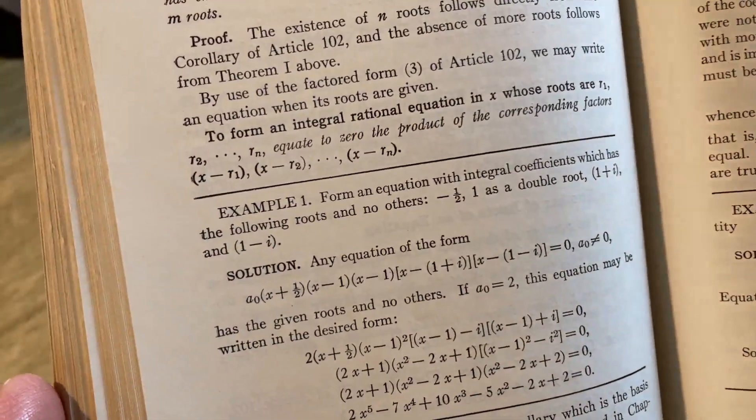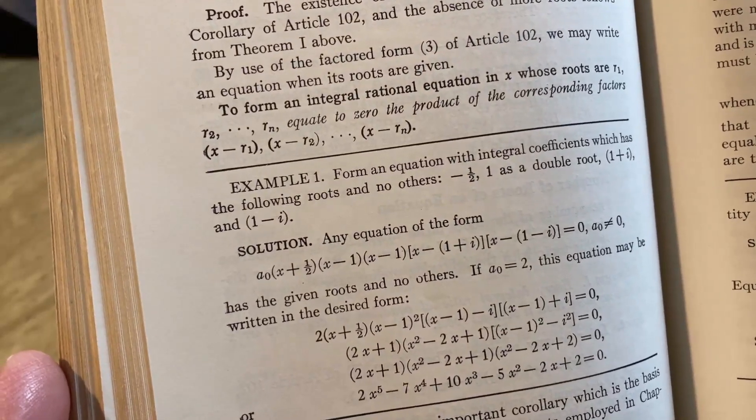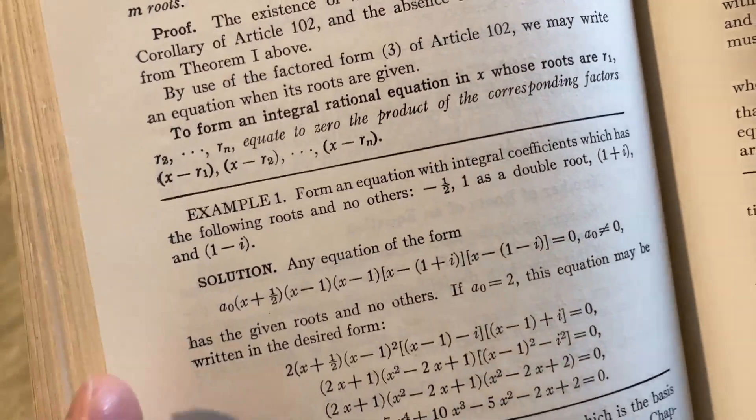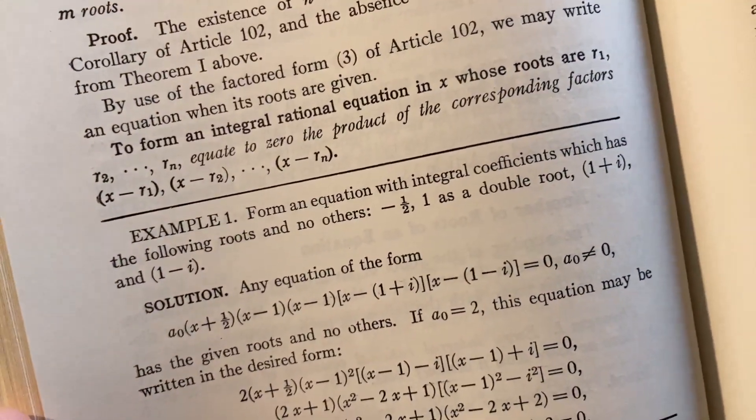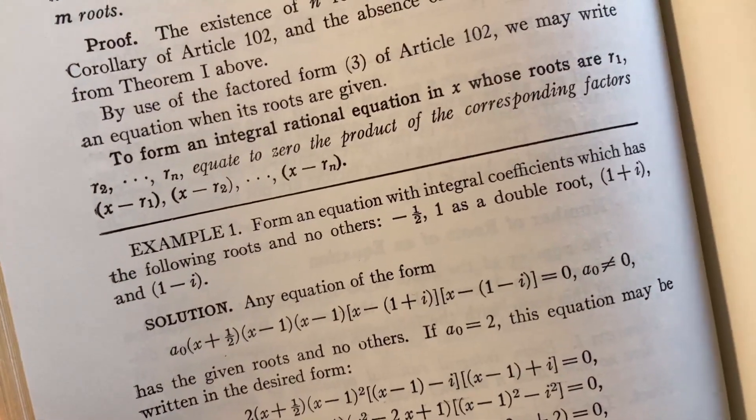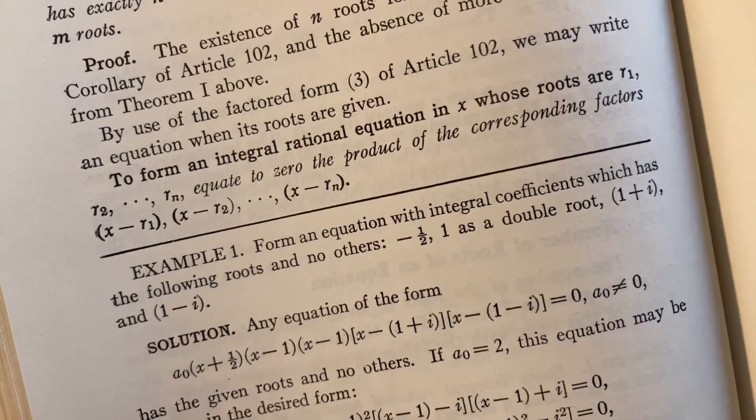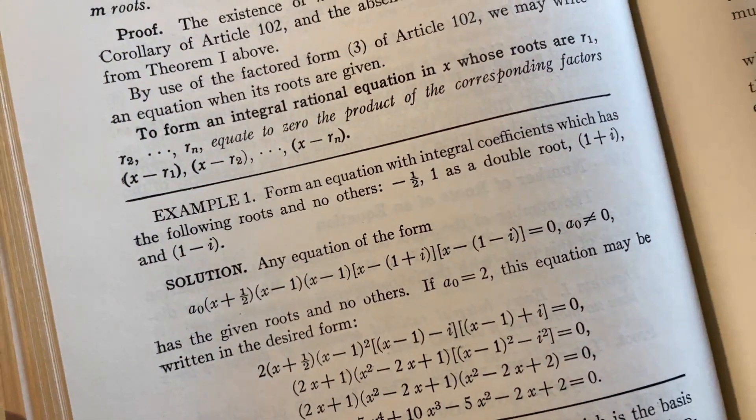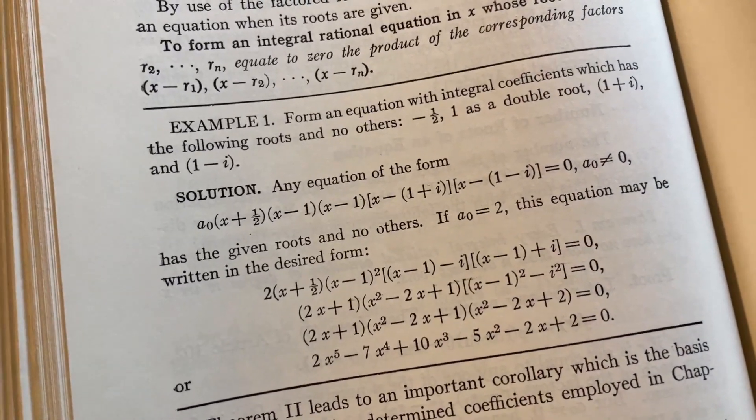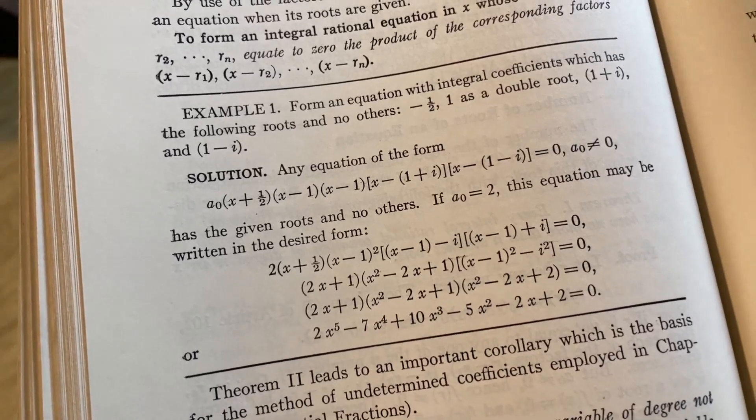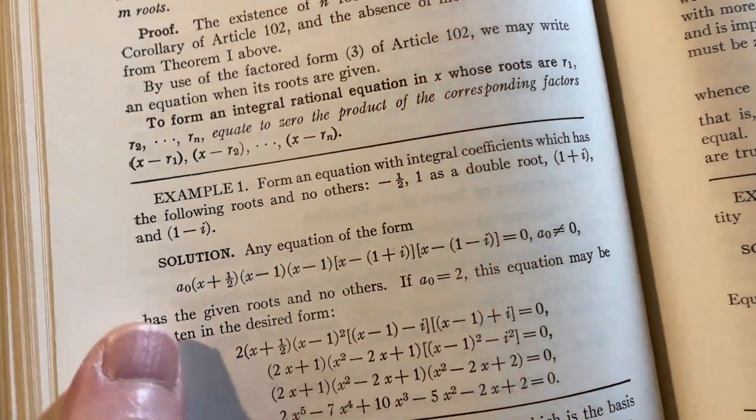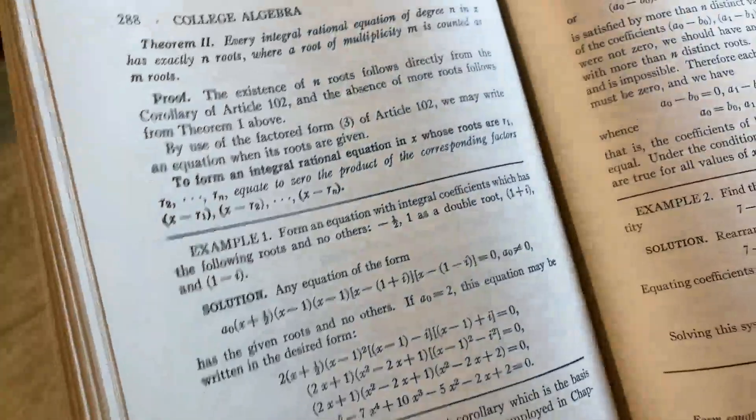What's this say? Form an equation with integral coefficients—that means that the coefficients are integers—which has the following roots and no others. Beautiful. Negative one-half, one is a double root, one plus i and one minus i. Well, they're being nice. They could have just said one plus i, and then you would know that because one plus i is a root, so must one minus i, because complex roots come in conjugate pairs. That's often a question you'll see in a college algebra class. But it's certainly a harder one, and they're giving you one as a double root. This problem is one that students usually struggle with. So here they give you an equation of the form, has the given roots and no others. And then they tell you if a sub zero equals two, then this equation may be written as desired. A lot of textbooks will give you a condition, and you have to solve for a sub zero. So this is considered a harder college algebra problem.